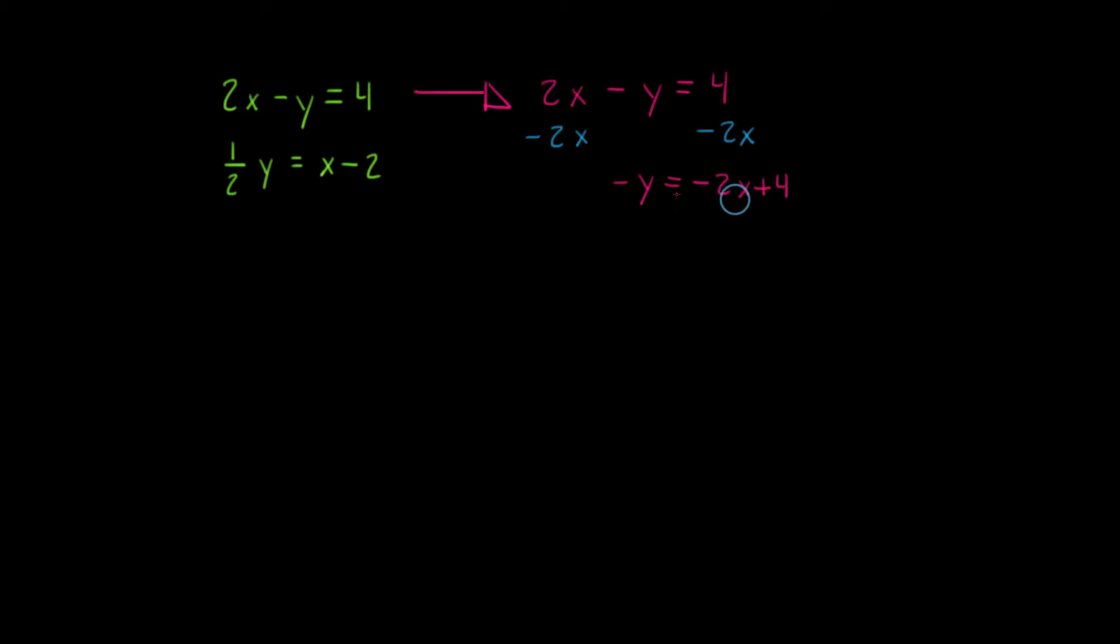And now I'm just going to change the signs in each of my terms because I want to make this a positive variable, a positive y. So I have y is equal to 2x minus 4.